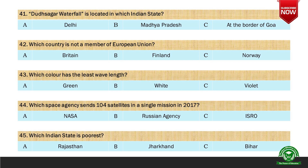Next question: Which color has the least wavelength? Options are A. Green, B. White, and C. Violet. And the correct option is C. Violet.